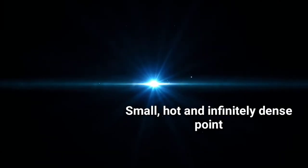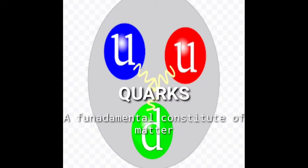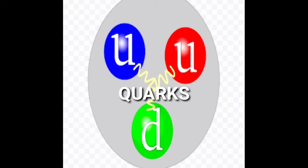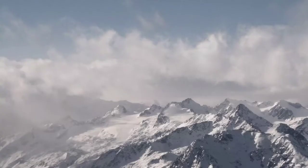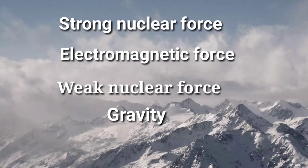Spreading everything away from it, quarks formed — a fundamental constituent of matter — containing two up quarks and one down quark. Around this time, matter won the battle against antimatter.